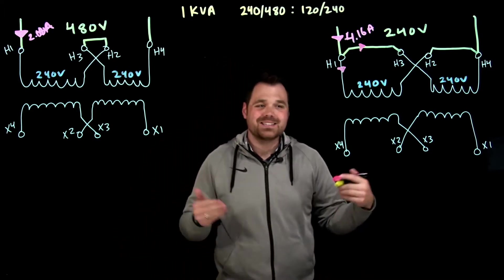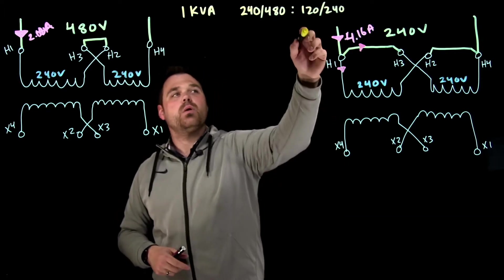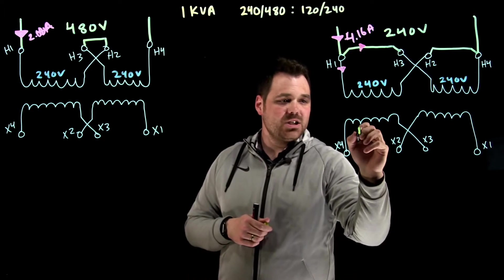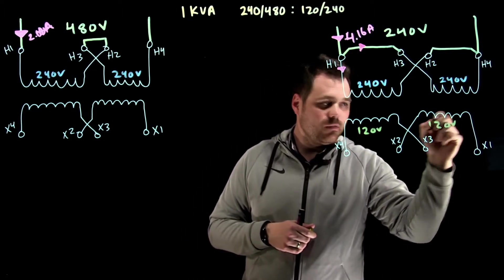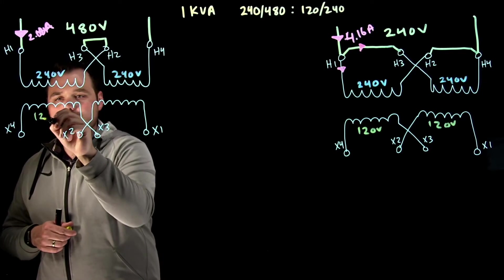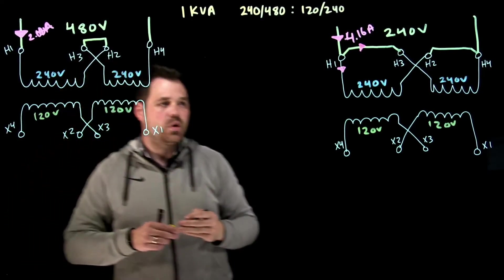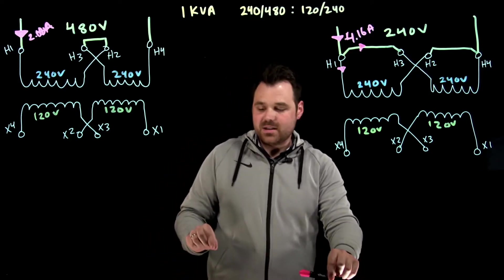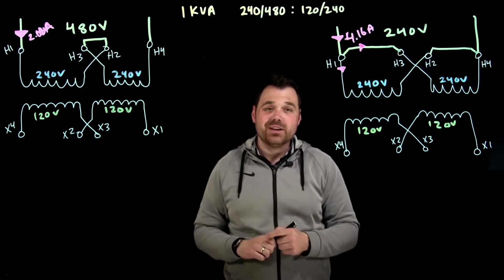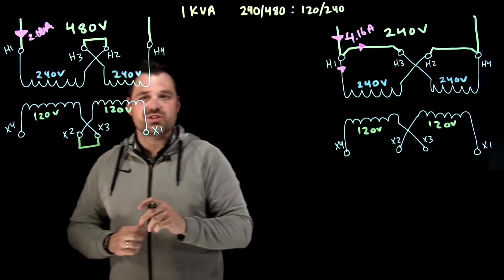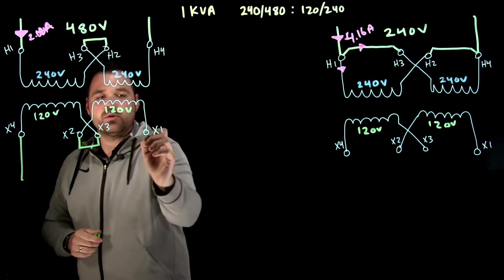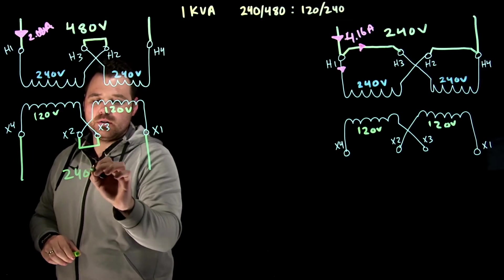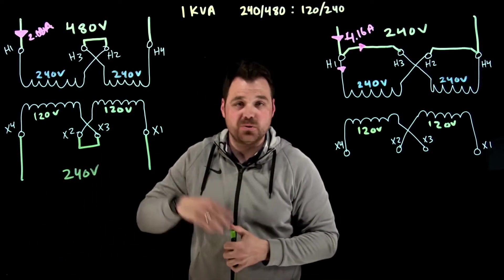Let's do the same thing on the X side, the low voltage side. It says we're 120 to 240 volts on that low voltage side. That means each winding is rated for 120 volts. So if I were to connect that in a series, just like that, those voltages would add up. 120 plus 120 would give me 240 volts, meaning I could connect it to a 240 volt source